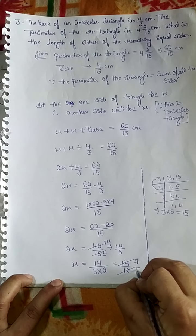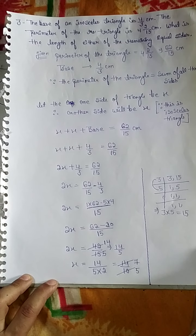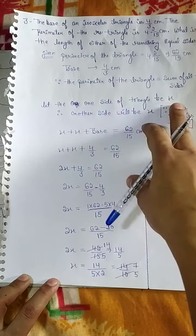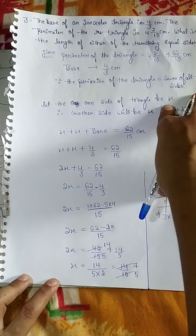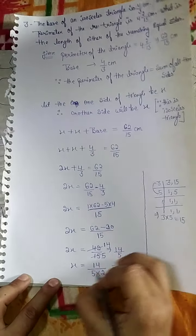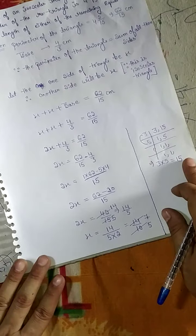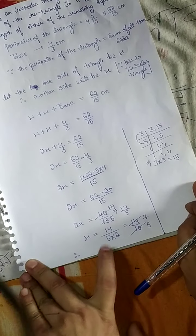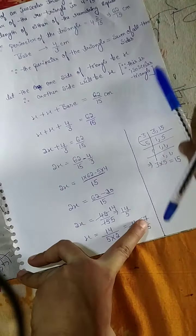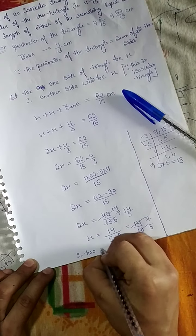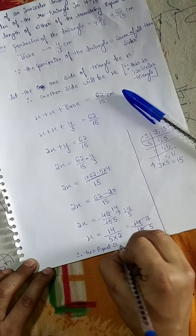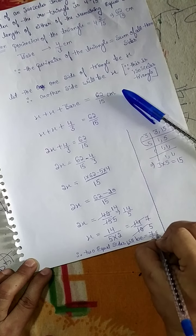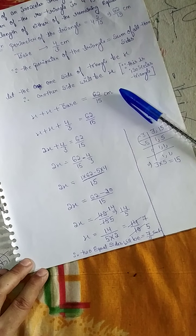Simplifying: 2 times 7 is 14 and 2 times 5 is 10, so X equals 7 upon 5. Therefore, the two equal sides are X and X, and X equals 7 upon 5. Therefore, the two equal sides will be 7 upon 5 centimeter each.